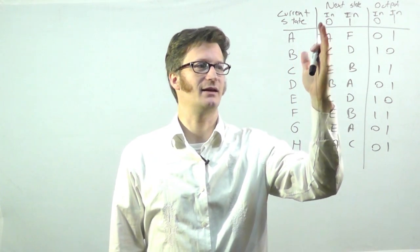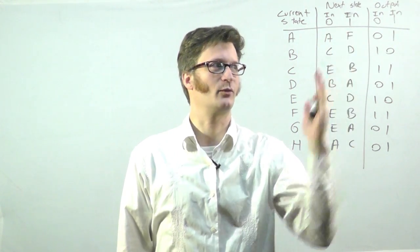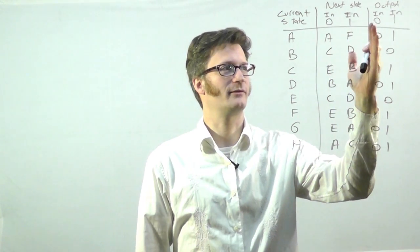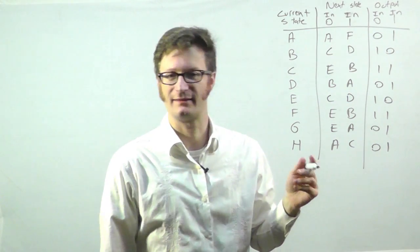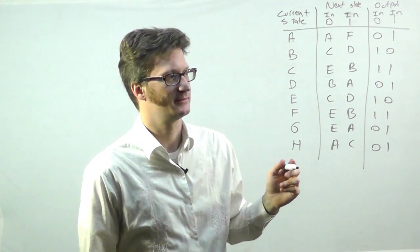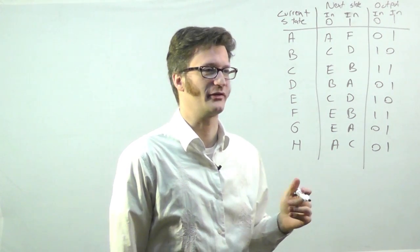But here, I've taken it and I put my next states for zero here, and my next states for one here, and my output for zero, and my output for one. And it's necessary to do it this way, if you want it to be easy, when you're doing state reduction.